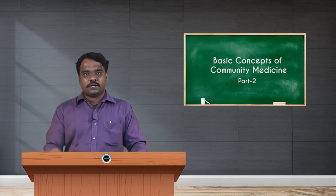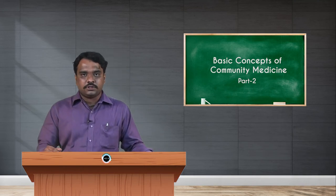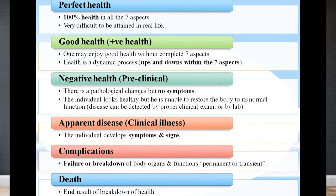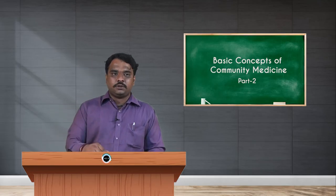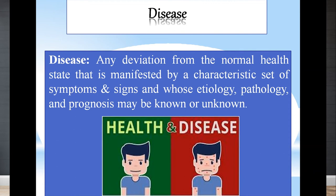If apparent disease is not properly cared for, diagnosed, or treated, it leads to further complications. If repeatedly exposed and it becomes chronic illness, the lifespan of the individual is reduced, eventually leading to death. In summary: ideal health means all seven aspects are stable; good health has ups and downs; negative health is pre-clinical detectable by investigations; apparent disease involves signs and symptoms; and complications represent failure or breakdown of specific organ systems leading to death.